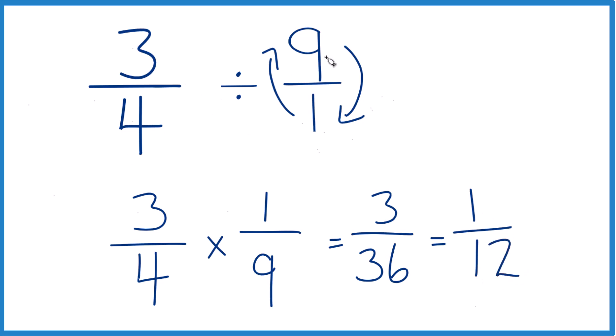So 3 fourths divided by 9, or 3 fourths times 1 ninth, we end up with 1 twelfth. This is Dr. B, thanks for watching.